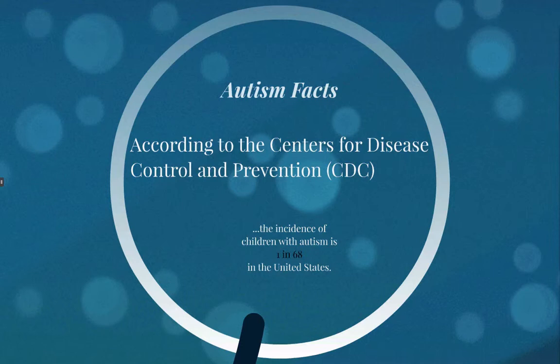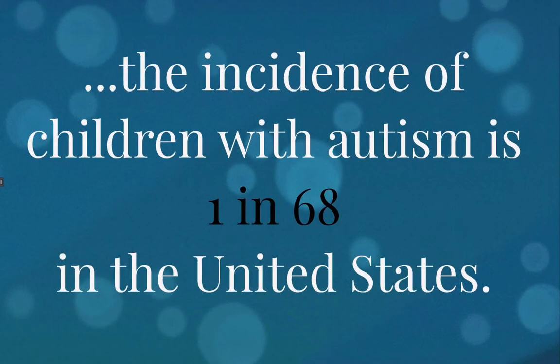Currently, according to the Centers for Disease Control and Prevention, or CDC, the incidence of children with autism is 1 in 68 in the United States. That number has grown dramatically in the last 10 years. This is also a 30% increase from 2012.